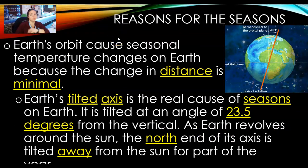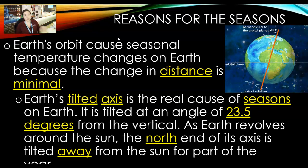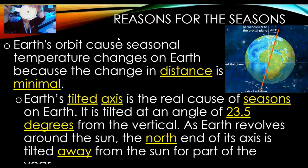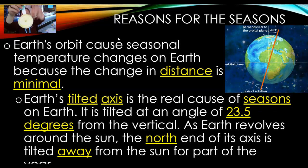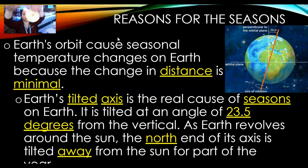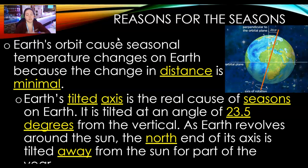So the reason that we have seasons — Earth orbits the sun, which causes temperature change. Here's the Earth; it revolves around the sun. As it does this, it doesn't go in a perfect circle like you see here. What it does is an elliptical orbit.